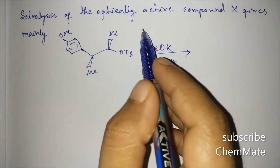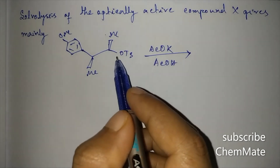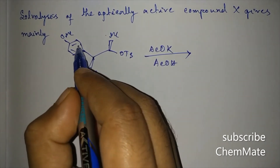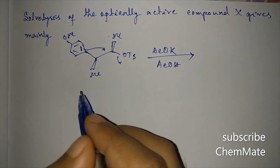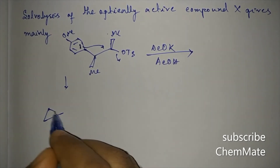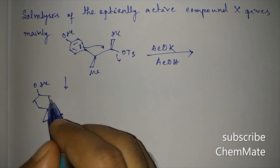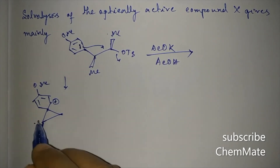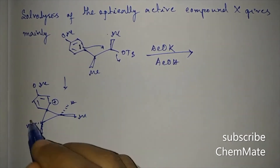The next question involves solvolysis of an optically active compound X. There is a phenyl group attached to the alpha carbon adjacent to the leaving group (OTs). When a phenyl group is on the alpha carbon, neighboring group participation occurs — the phenyl acts as a neighboring group, facilitating departure of OTs to form a phenonium ion intermediate.